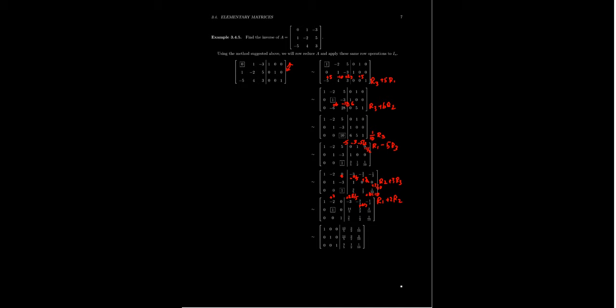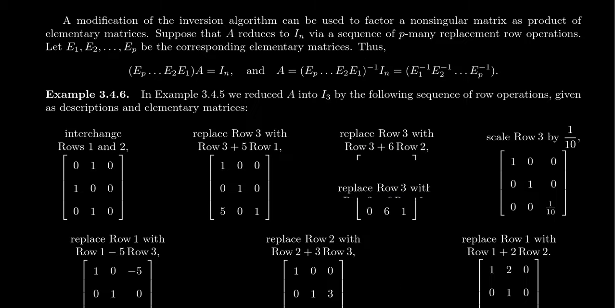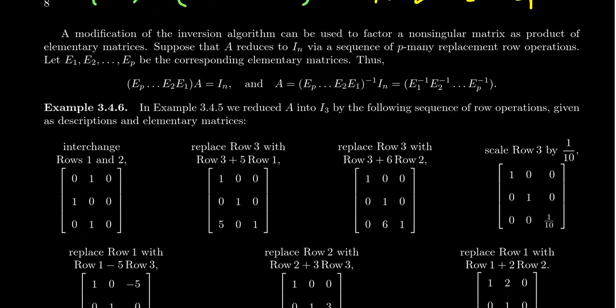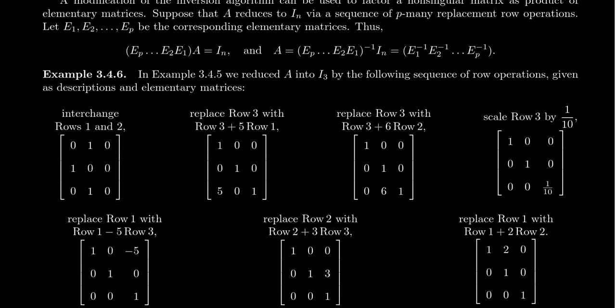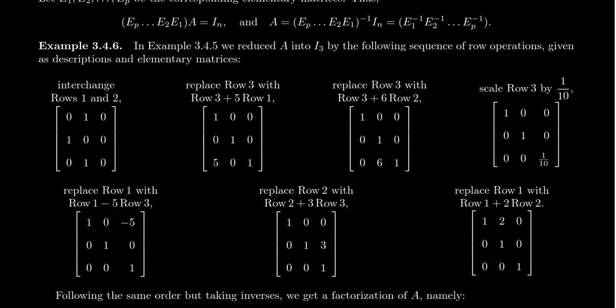We then replaced row 3 with row 3 plus 6 times row 2, then scaled row 3 by 1 tenth, followed by replacing row 1 with row 1 minus 5 times row 3, replacing row 2 with row 2 plus 3 times row 3, and lastly replacing row 1 with row 1 plus 2 times row 2. That was the sequence of row operations. Now let's convert each into an elementary matrix.